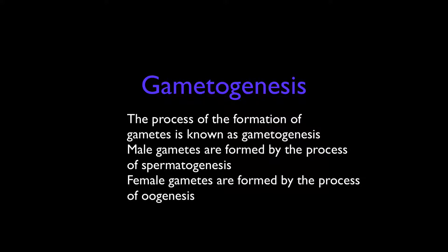We have two types of gametes: male and female. We have two genders, male and female. The process of making female gametes is called oogenesis. These are two different types of gametes, and for this we give them different names. First, we learn what spermatogenesis is.